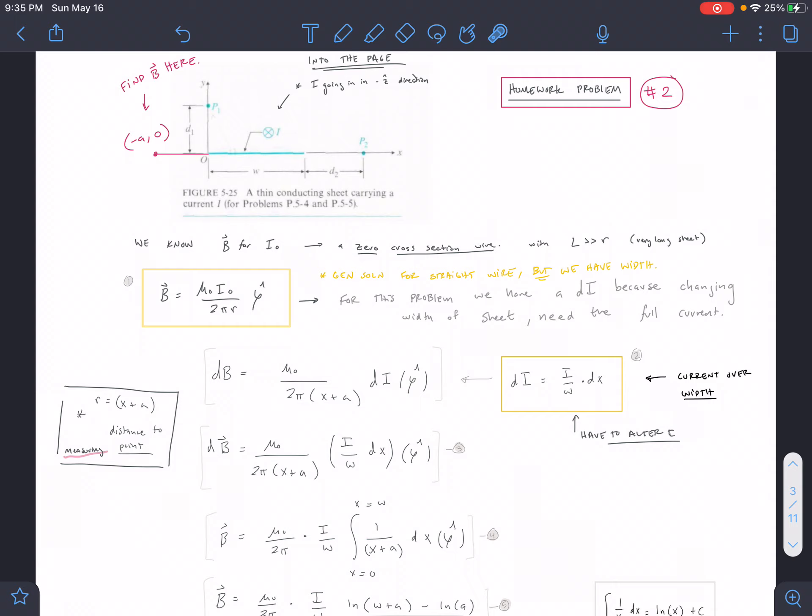We're essentially accumulating all of these charged wires and kind of treating them as like a sum of different dx's or like differential wires, because we have a full sheet. So a plus x, and then we're going to integrate over x.